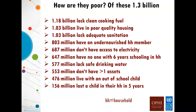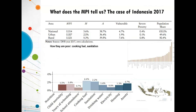One of the value-added aspects of the global MPI for policy is that it shows not only who is poor, but how they are poor, in terms of each of the 10 indicators. Of those 1.3 billion people who are poor, over 1 billion lack clean cooking fuel and are at risk of acute respiratory infections, live in poor quality houses, and lack adequate sanitation. Over 800 million share their household with somebody who is undernourished, and over 600 million lack electricity.